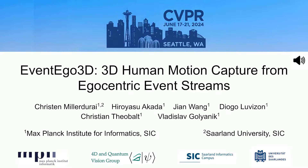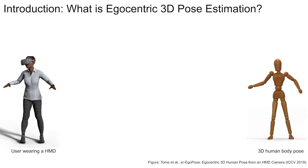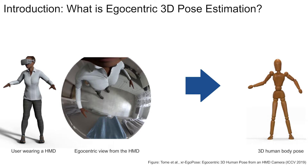This paper introduces Event Ego 3D, the first approach for 3D human pose estimation from an egocentric monocular event stream. Egocentric 3D body pose estimation involves estimating the 3D body pose of the user from the perspective of the head-mounted device, also known as the egocentric view.